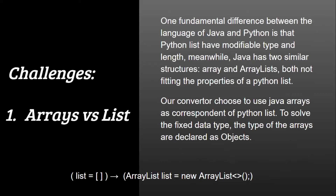Before talking about how the program works, I'll discuss some challenges I faced. One fundamental difference between Java and Python is that a Python list has a modifiable type and length. Java has two similar structures — array and ArrayList — but neither fits both properties that Python lists have. Our converter chose to use Java arrays as the corresponding Python list. To solve the fixed data type issue, the types of arrays are declared as objects. However, this creates a more complicated problem: the casting of elements as objects in the ArrayList to their designated data type whenever they are used.